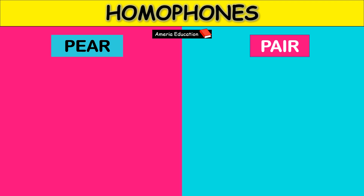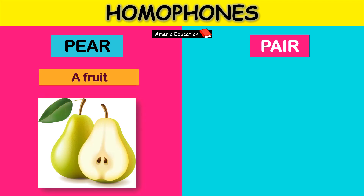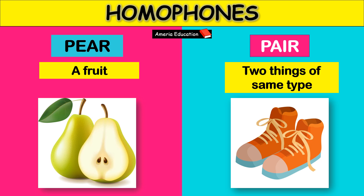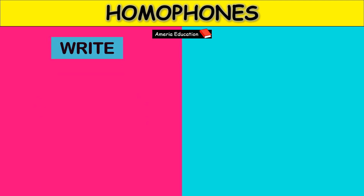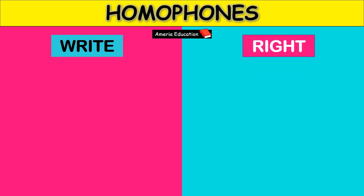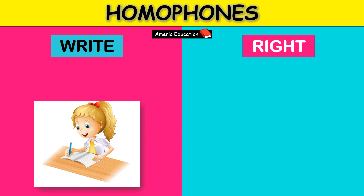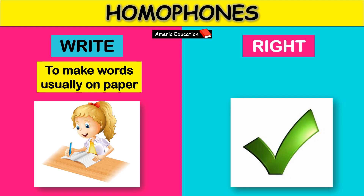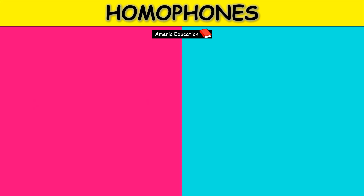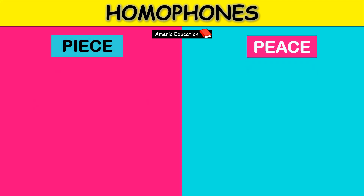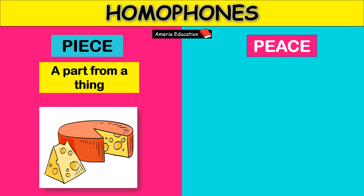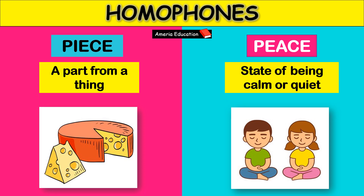P-E-A-R means a fruit. P-A-I-R means two things of the same type. W-R-I-T-E means to make words, usually on paper. R-I-G-H-T means correct. P-I-E-C-E means a part from a thing. P-E-A-C-E means a state of being calm or quiet.